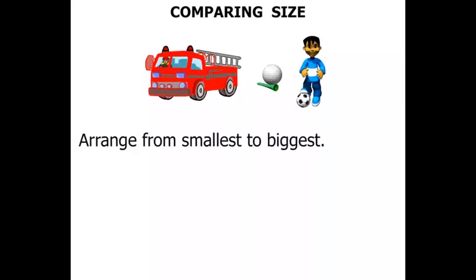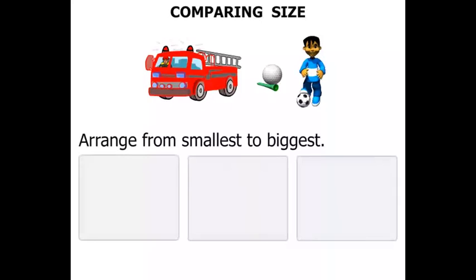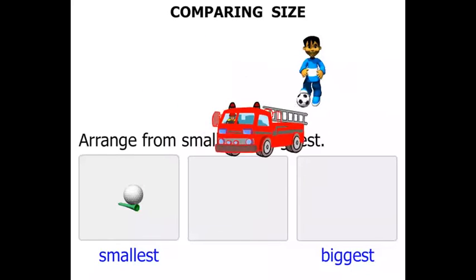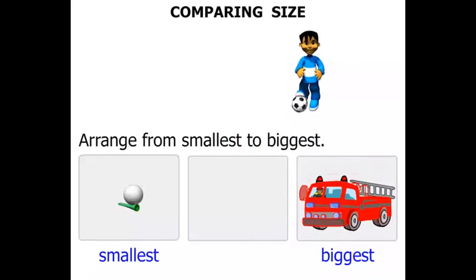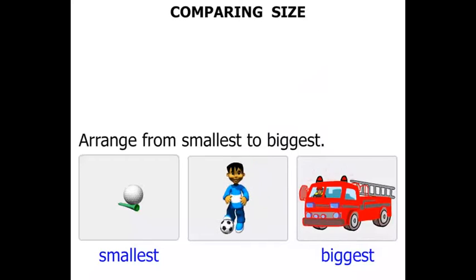We need to arrange from smallest to biggest. So we're going to have the smallest there, and then the biggest. The smallest is certainly the golf ball and the tee. Quite small. What do you think the biggest would be? It's the fire engine. And the boy in the soccer ball would be somewhere in between.